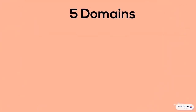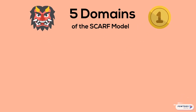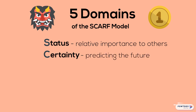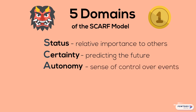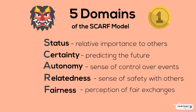Now we're getting into the five domains of the SCARF model — areas where we feel both threatened and rewarded. The first is Status, defined as our perception of relative importance to others. Certainty has to do with predicting the future. Autonomy is a sense of control over events. Relatedness is a sense of safety that we feel with others. And Fairness is a perception of fair exchanges.